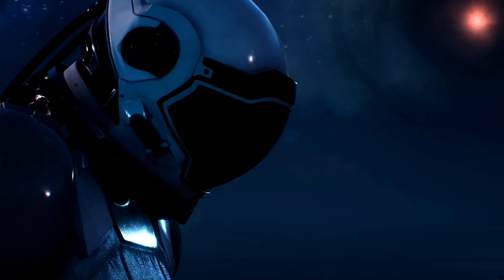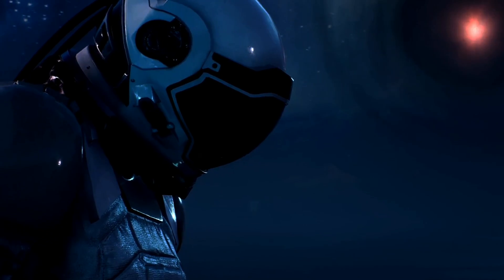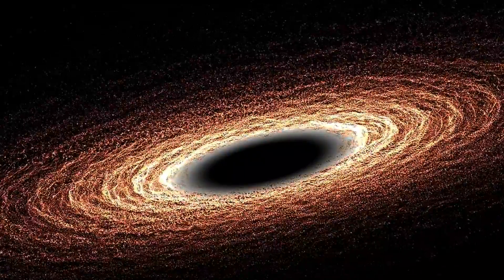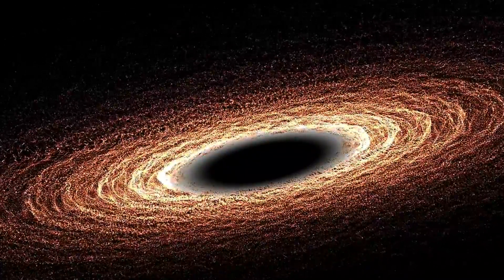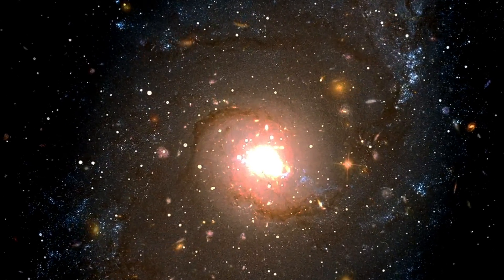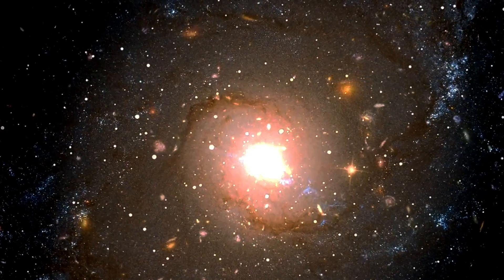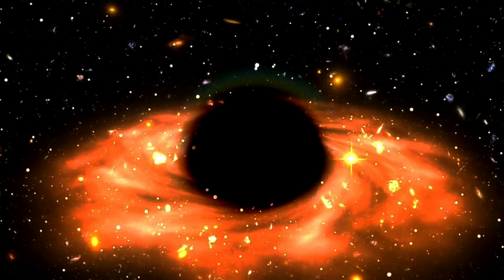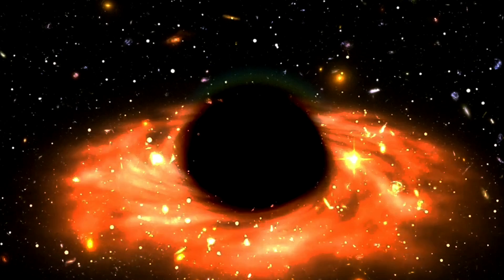Supermassive black holes, the colossal titans of the cosmos, are the largest type of black holes known to astronomers. These gravitational behemoths range from hundreds of thousands to billions of solar masses. To put this into perspective, supermassive black holes up to 21 billion times the mass of our Sun have been detected. Unlike their smaller counterparts, supermassive black holes have surprisingly low average densities. In fact, the average density of a supermassive black hole can be less than that of water.